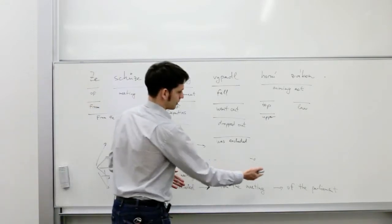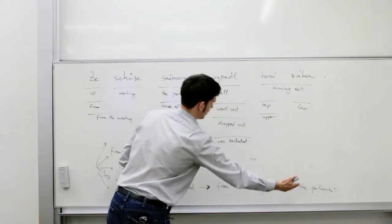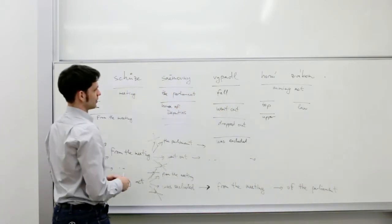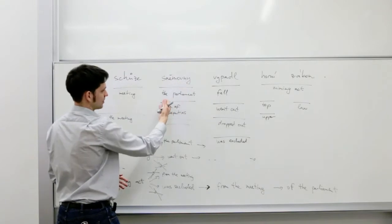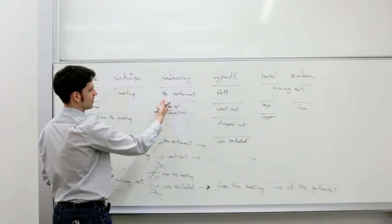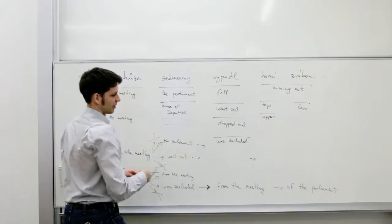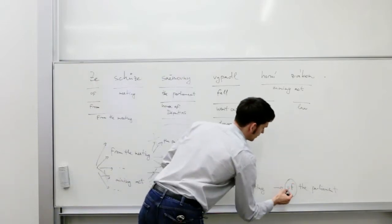Another problem is that here we have the phrase of the parliament, but in our translation option collection, the word sněmovny was translated and seen in our training data only without the preposition, only as the parliament. So this of can be easily missing.